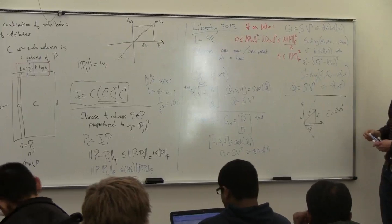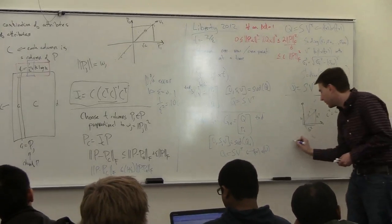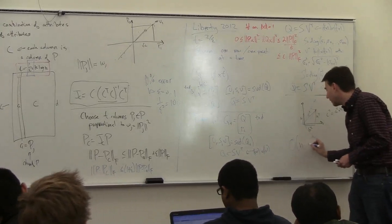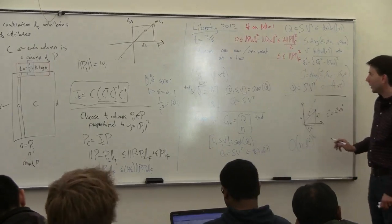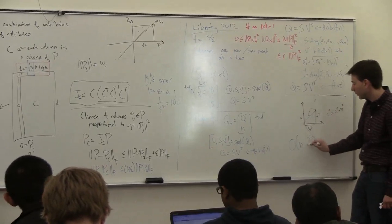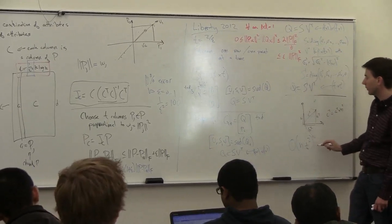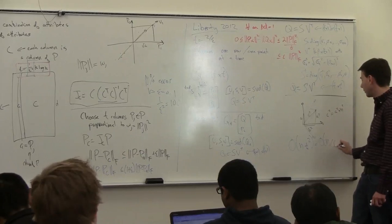The total time here is going to be O of N times L squared. The size is going to be, this is T times T squared. So this is going to be equal to O of N over epsilon squared.